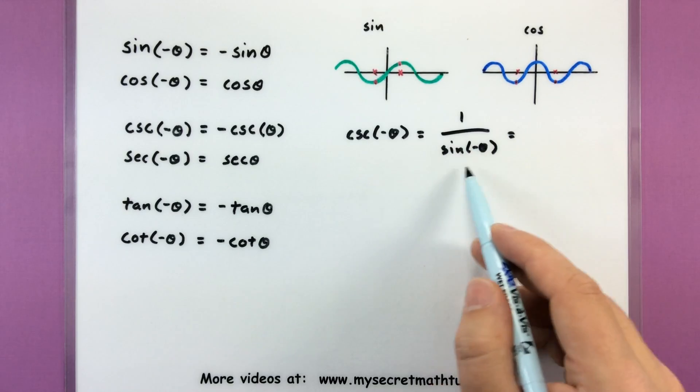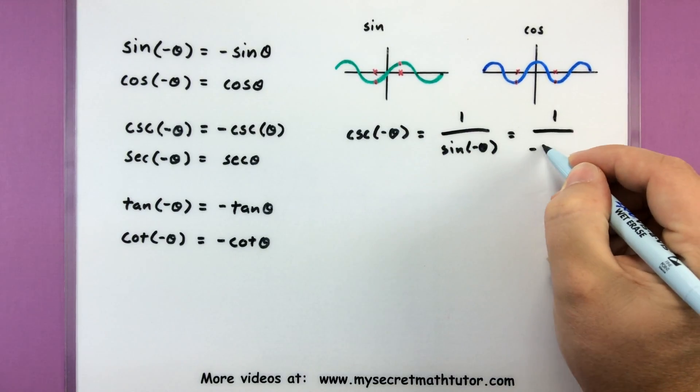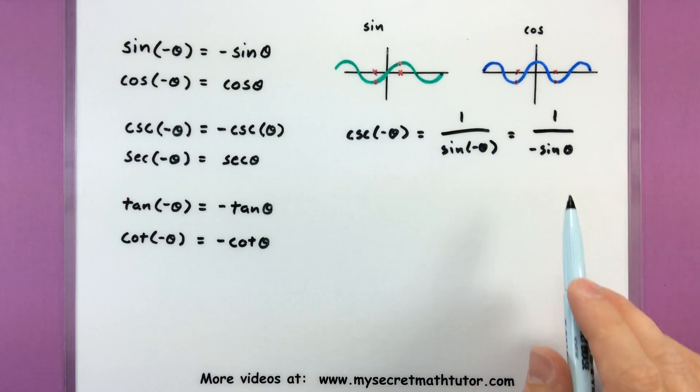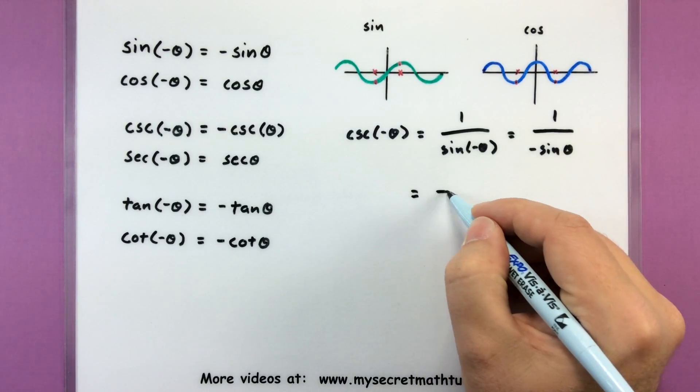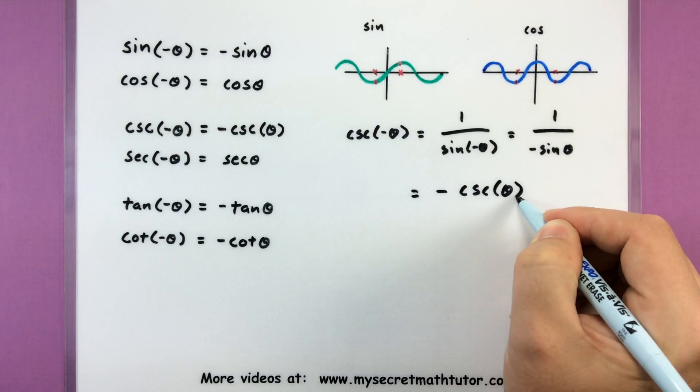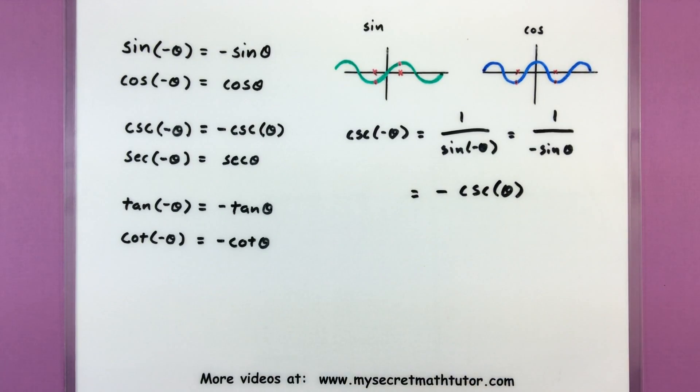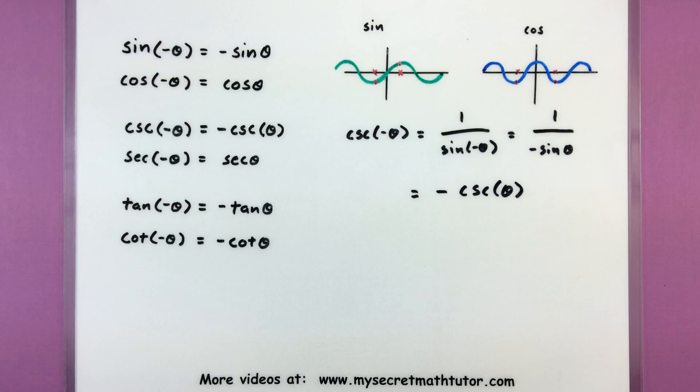So I'm just going to replace it with one over sine of negative theta. Now, since I know what to do with sine of negative theta, I can go ahead and write this as one divided by negative sine of theta. So we're using that first identity there. And now rewrite this back into cosecant, so negative cosecant of theta. And you can do the same with all the rest of these. You simply write them in terms of sine and cosine, use your original two identities, and then see the overall result.